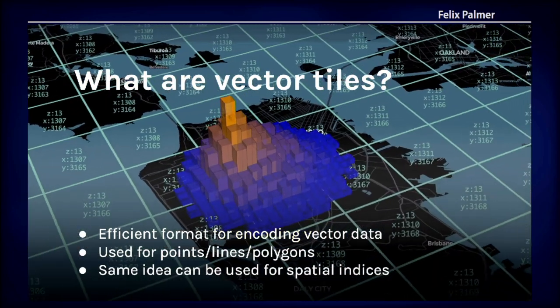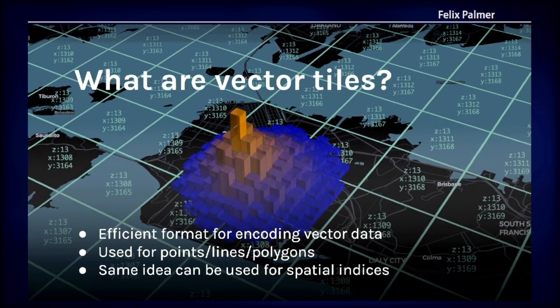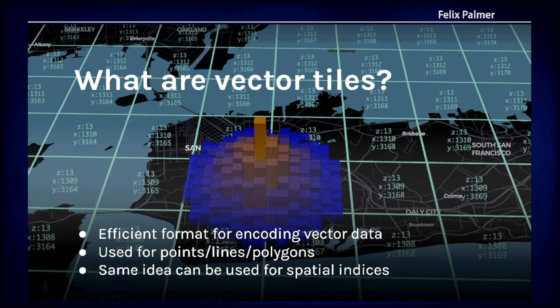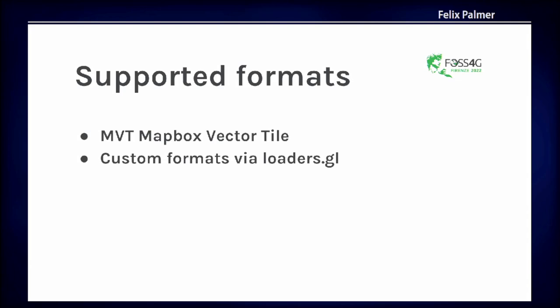Vector tiles are a quite generic concept — essentially a way of tiling geographic information, which can be points, polygons, lines, or even spatial indices, in a tiled manner. In deck.gl, the first format we supported is the most common one: Mapbox vector tiles. But because of the way deck.gl's architecture works, you can plug in pretty much any format — JSON, GeoJSON, CSV, well-known binary — and it will still work nicely.